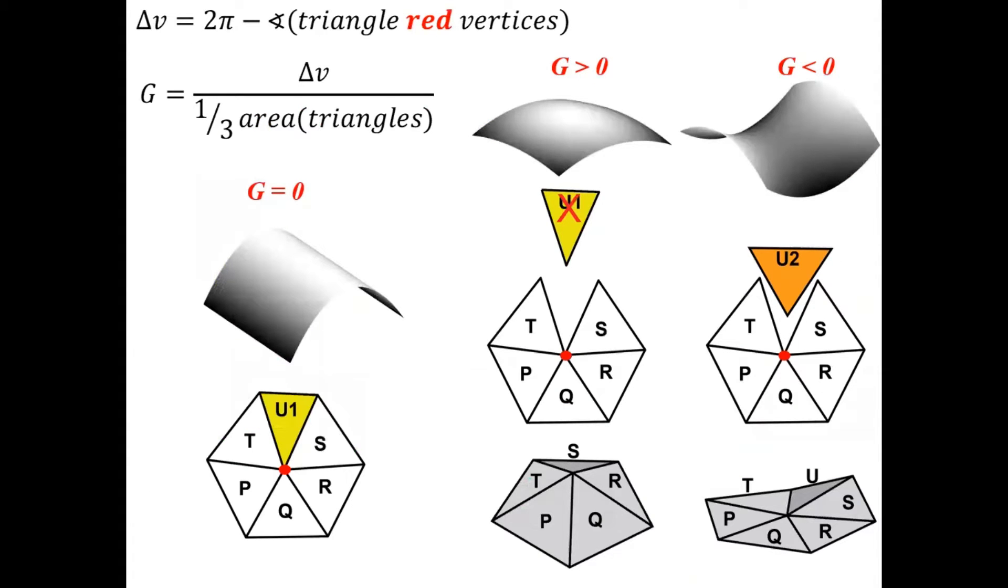Gaussian curvature tells us how much the surface differs from being flat. In other words, it tells us what happens when we try to flatten the surface.